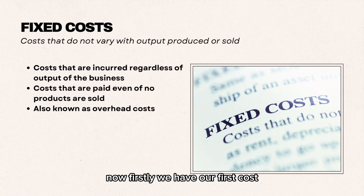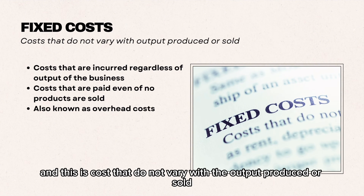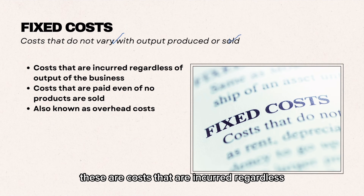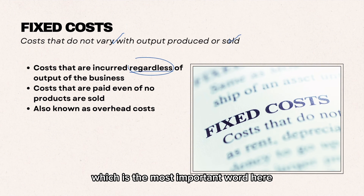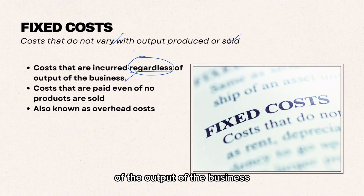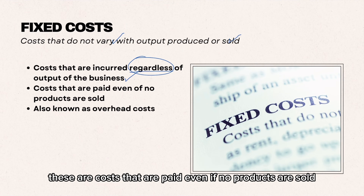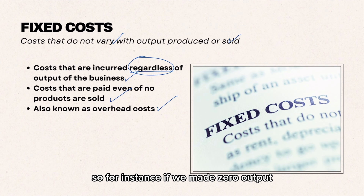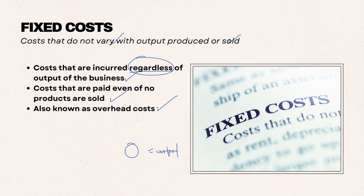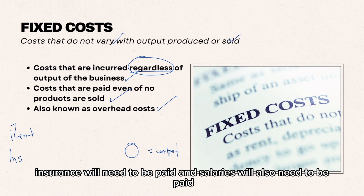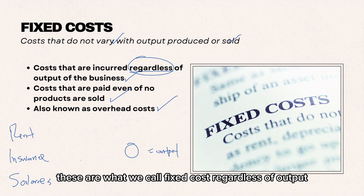Our first cost is a fixed cost, and this is costs that do not vary with the output produced or sold. These are costs that are incurred regardless — which is the most important word here — of the output of the business. These are costs that are paid even if no products are sold, also known as overhead costs. For instance, if we sold zero pizzas, rent, insurance, and salaries will still need to be paid. These are fixed costs regardless of output.